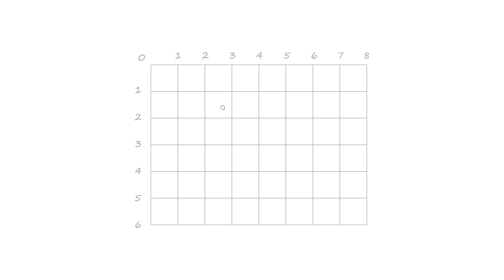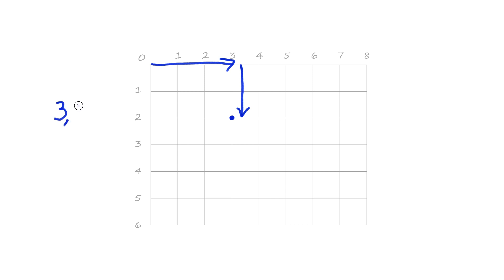If I wanted to talk about a particular position on the canvas precisely, the way to do it is to say where it is. Where it is might be three across and two down - that's where it is: three across and two down. The way we write that is to say three comma two, and we sometimes put those numbers in brackets. So those are the coordinates.